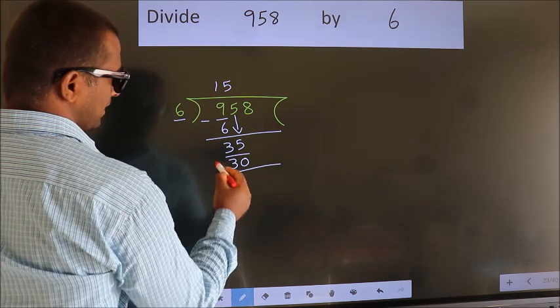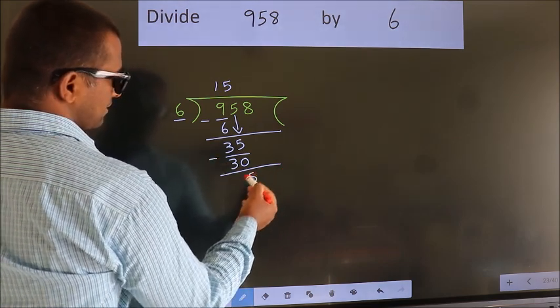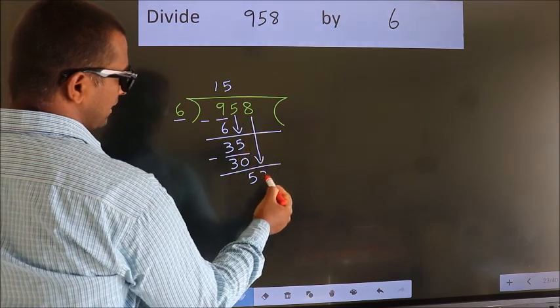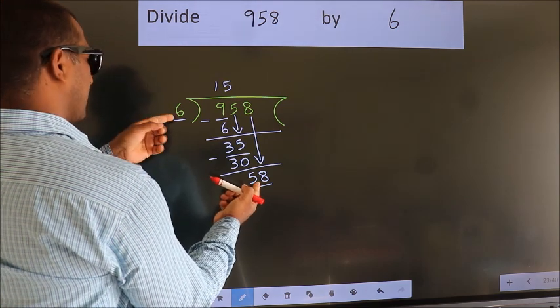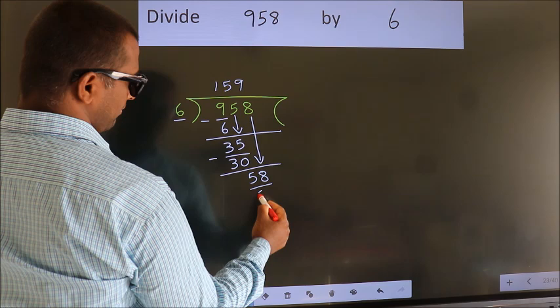Now we subtract. We get 5. After this, bring down the beside number. So 8 down. So 58. A number close to 58 in the 6 table is 6 nines 54.